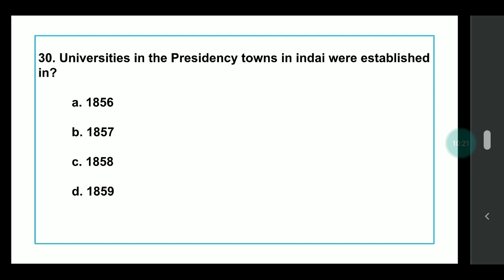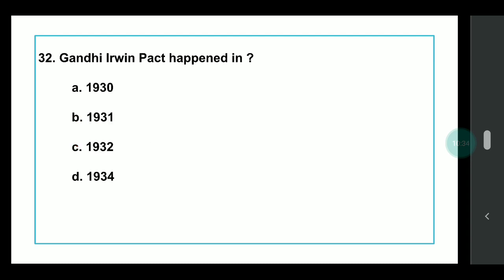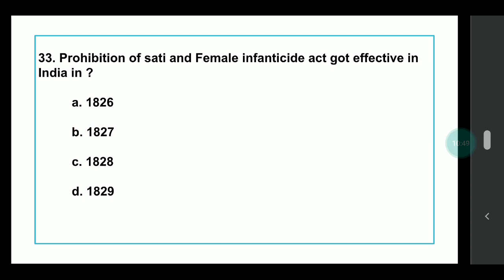Q27: Universities in the presidency towns of India were established in which year? Answer: 1857. Q28: Who was the father of local self-government? Answer: Lord Ripon. Q29: The Gandhi-Irwin Pact was signed in which year? Answer: 1931, after which Gandhi ji attended the Second Round Table Conference. Q30: The Prohibition of Sati and Female Infanticide Act came into effect in India in which year? Answer: 1829.